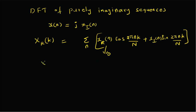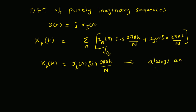So x_r of k equals the summation of x_i of n multiplied by sin(2πnk/N). Therefore, the real part is always an odd function.